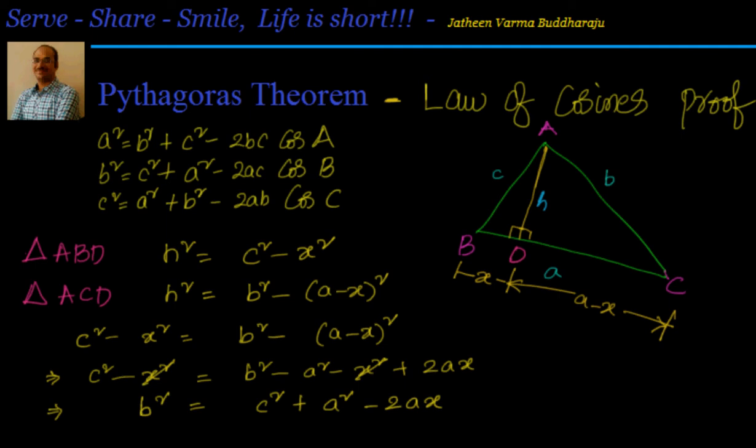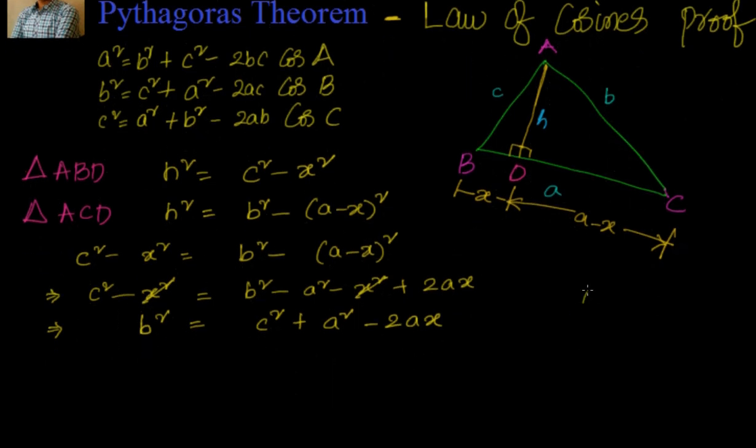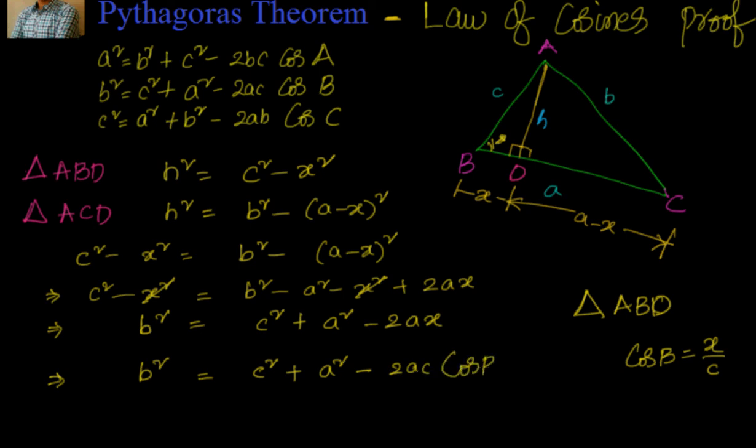But we know that from triangle ABD, cos of angle B is equal to x/c. So I will say b² = c² + a² - 2ac cos B.